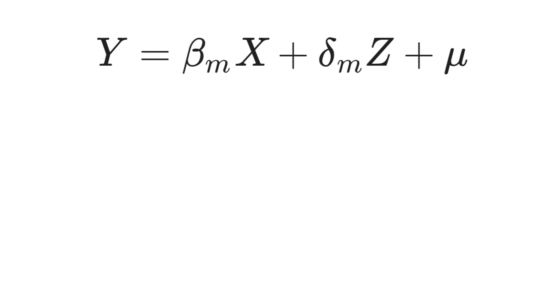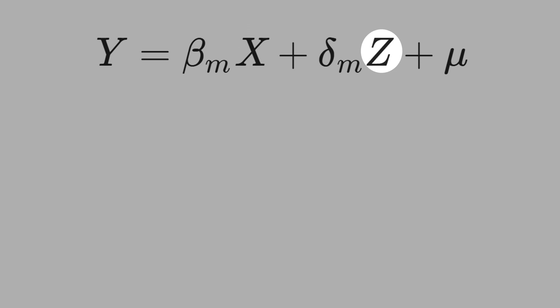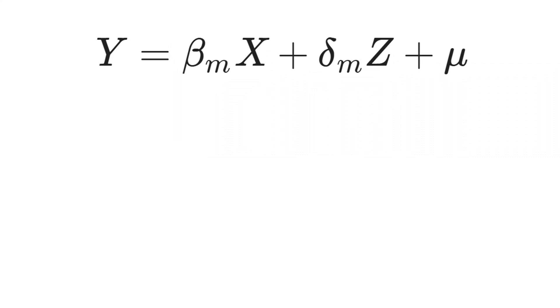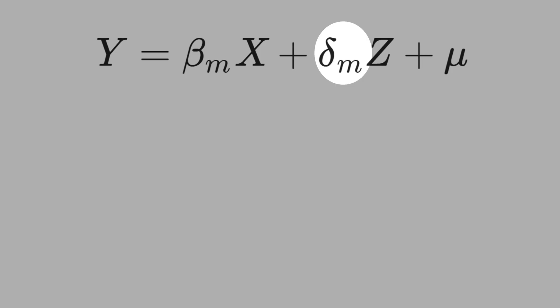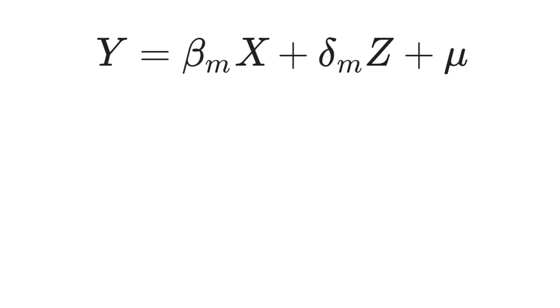What happens is different if you run a multiple regression with variables X and Z. Note that you call the slope of X beta_m. This 'm' means multiple regression. The slope of Z, delta_m for multiple regression, might be different from the simple regression.